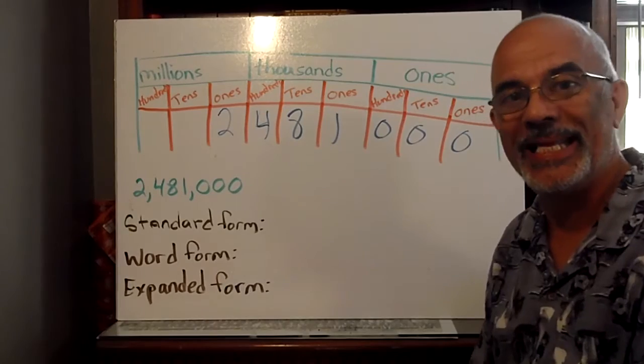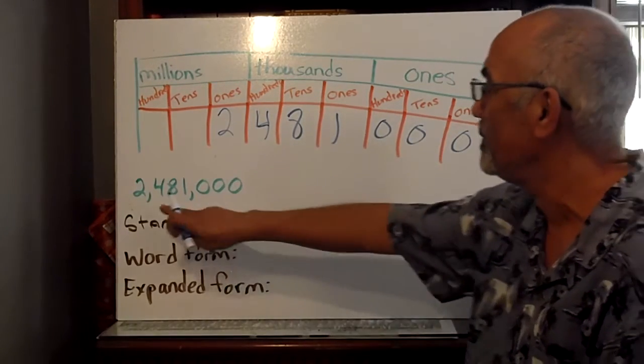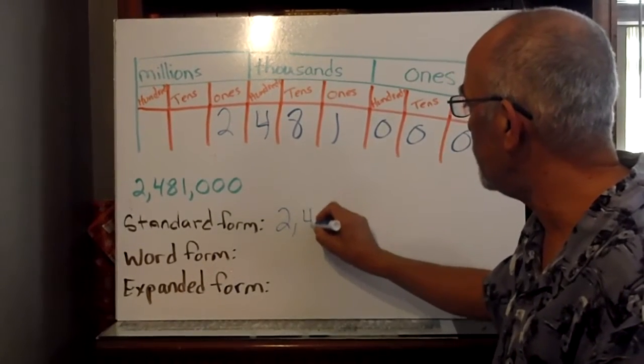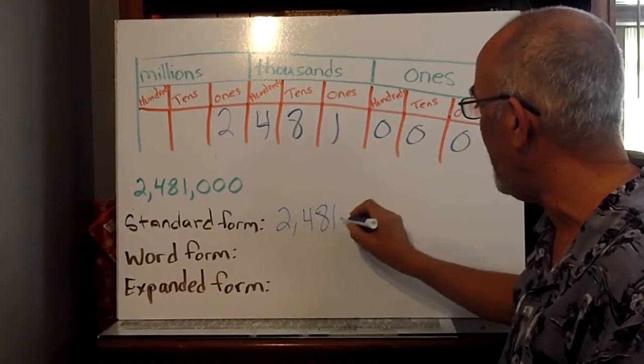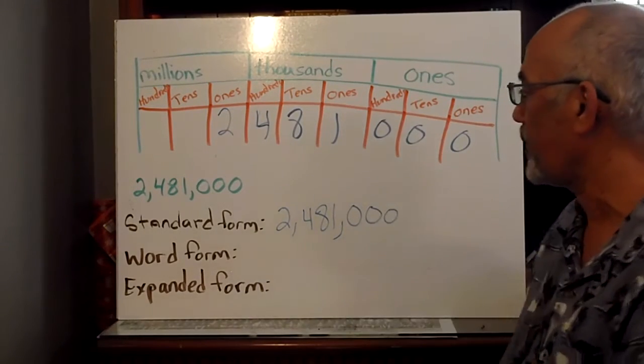Now, if we were to write this in standard form, this is our standard form. Two million, four hundred and eighty-one thousand.